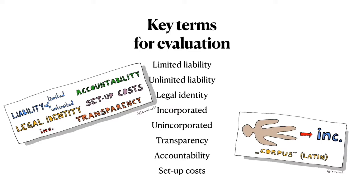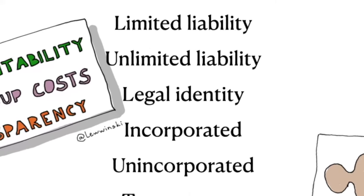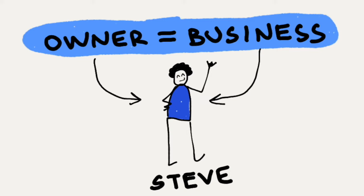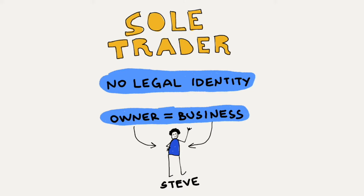So we have liability, which can be limited — when you only risk losing your initial investment — and unlimited — when you risk losing everything you own. Liability is also related to legal identity. Legal identity is whether you exist or not from a law perspective. Just as you have a passport to prove your identity, some businesses do not have legal identity, such as sole traders. If I run a business as a sole trader, my business does not have its own legal identity — my business and myself are the same thing. There's no distinction between me and my business; it's the same entity.